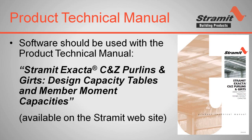It is highly recommended that you use the X Factor software in conjunction with the Product Technical Manual, called Stramit Xacta C and Z Purlins and Girts Design Capacity Tables and Member Moment Capacities. The technical manual will provide you with important information such as section sizes and properties, installation, accessories, materials, etc. This manual can be downloaded from the Stramit website at www.stramit.com.au in the resource library under the Product Technical Manual section. Alternatively, you can also request a hard copy of the manual from your nearest Stramit branch.